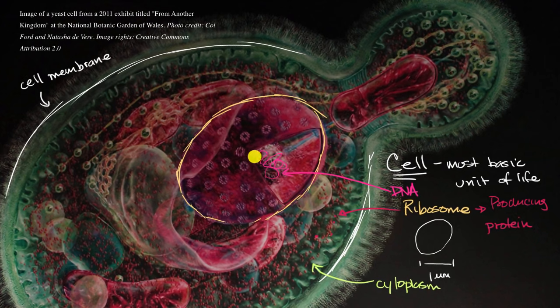In a prokaryotic cell, the DNA is just floating around in the cytoplasm. While in a eukaryotic cell, the DNA, for the most part, is inside of your nucleus. And it is part of the nucleoplasm.